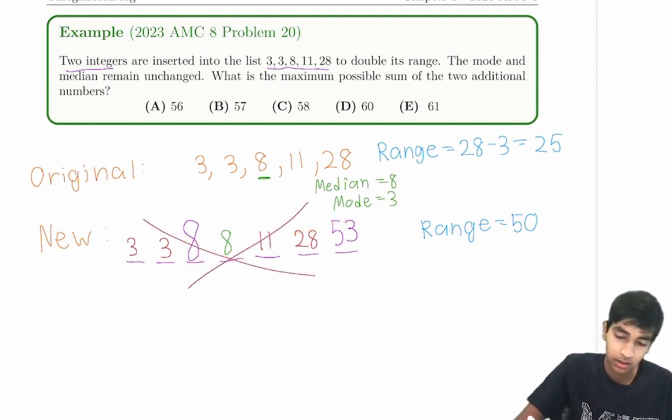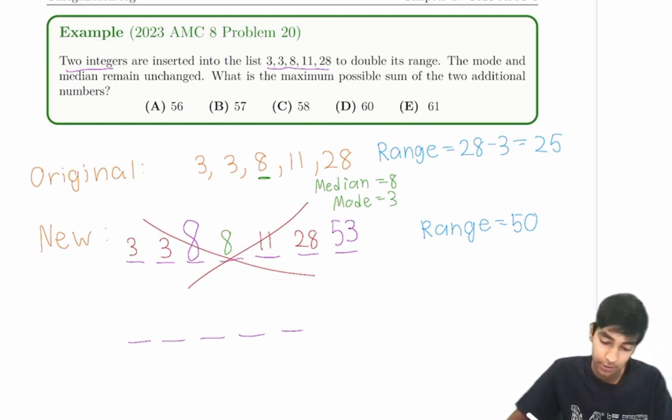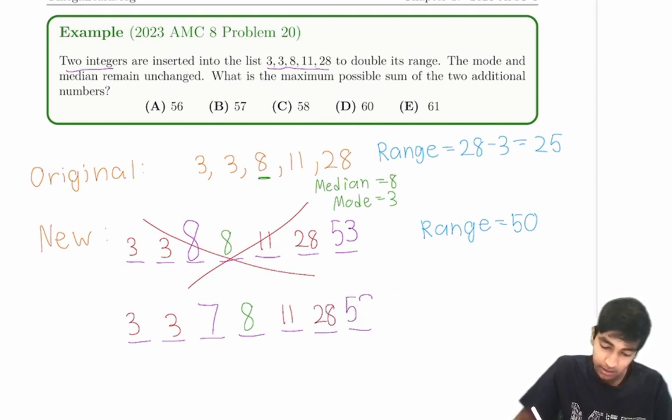Okay, so that doesn't work. What is the next possibility we can try? So notice that we're essentially inserting a left number, a number on this side, and a right number, a number on this side. I'm going to refer to them as left and right numbers. So what is the second highest possibility for the left number? We already saw 8 is too big. Now, what about 7? Does that work? Well, let's see. Just like earlier, we would have that the highest number has to be 53, so that the range, 53 minus 3 is 50.